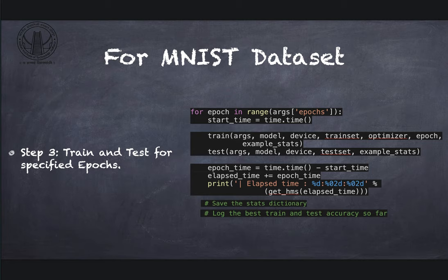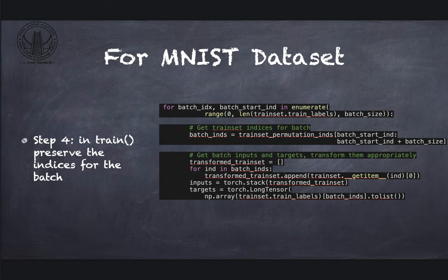Meanwhile in the training process you want to save the indices for the real examples in the batch. Within the train function you permute the samples on each mini batch and get the indices of each sample. If provided transformation flag, then you can proceed with transforming the dataset appropriately. The main function in step four is to get the indices for the mini batch which is a subset of permuted indices.